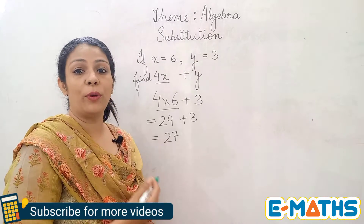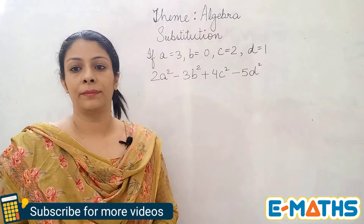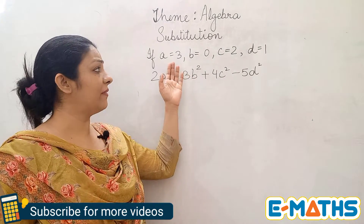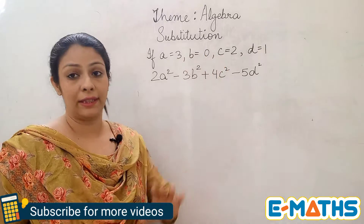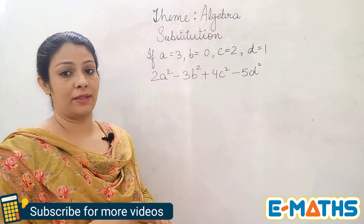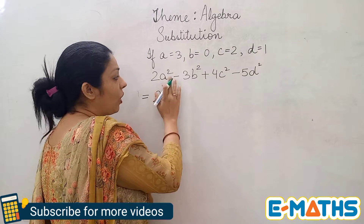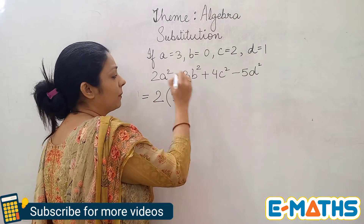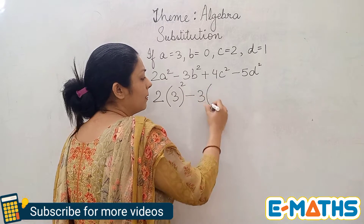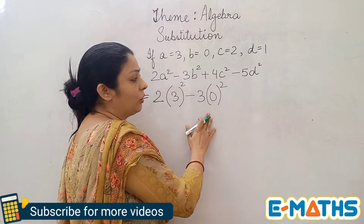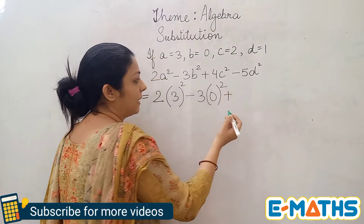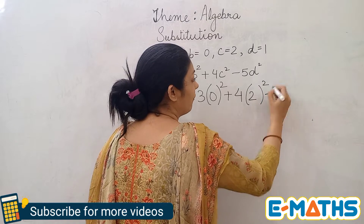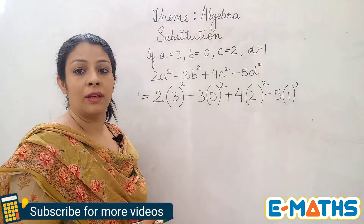That's how we put in the values in any expression when they are given to us. Now I have written another expression having four different terms — all unlike terms — and we have been given the values of all the variables a, b, c, and d. We are going to put in the values into the given expression. For 2a squared, you put the value of a in brackets, which is 3, and then apply the square. Minus 3 into b, where b is 0. Then 0 squared — although the 0 will make the entire term 0, we still write it down and don't skip any step. Then we write 4 in place of c, which is 2, and minus 5 where d is 1.